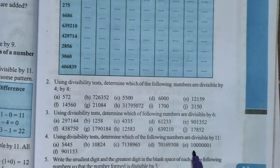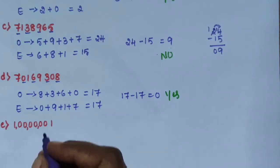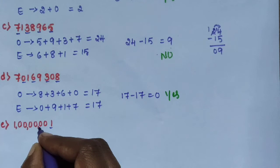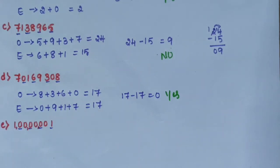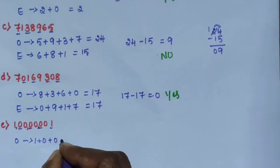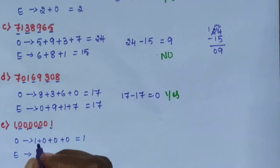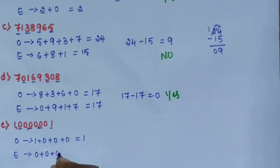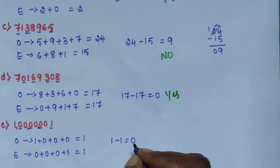Sub question E: 1 crore 1 (i.e., 10,000,001). Sum of digits at odd places: 1 plus 0 plus 0 plus 0 plus 0 plus 0 equals 1. Sum of digits at even places: 0 plus 0 plus 0 plus 1 equals 1. Difference: 1 minus 1 equals 0. Therefore, divisible by 11 is yes.